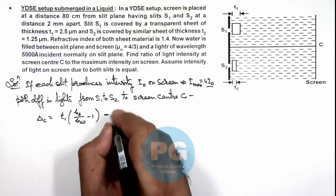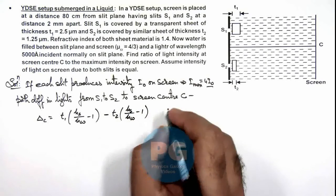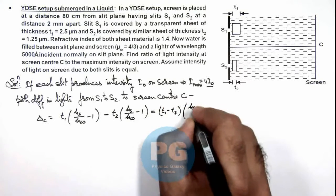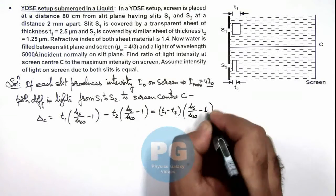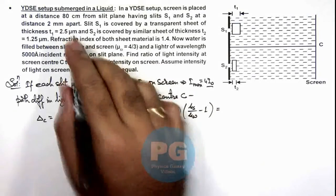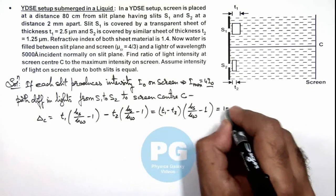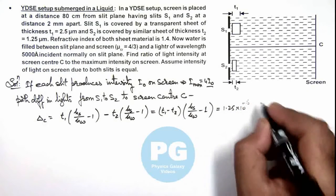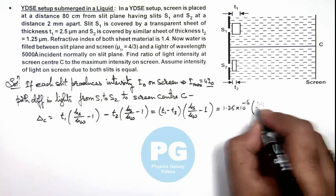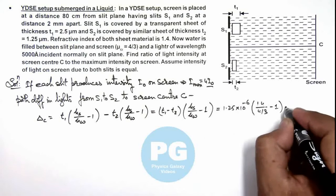Minus the path difference due to the second sheet which is t₂ multiplied by (μₛ/μw - 1). This numerically becomes (t₁ - t₂) multiplied by (μₛ/μw - 1). If we substitute the values: 2.5 micrometer and 1.25 micrometer, this is 1.25 × 10⁻⁶ multiplied by (1.4)/(4/3) - 1.